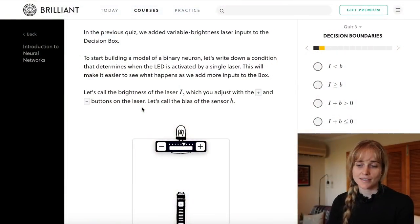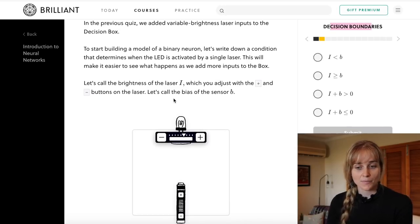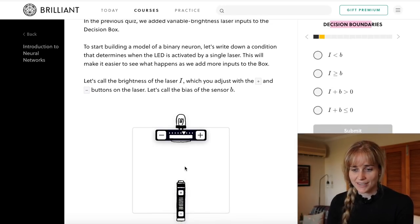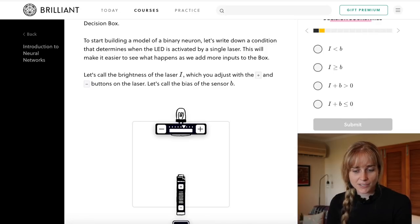We've jumped into a quiz called decision boundaries and here they are modelling a binary neuron which just means that it can either be completely activated or not activated, on or off. There is no in between and they're building this model of the binary neuron just by thinking about a little laser and an LED.